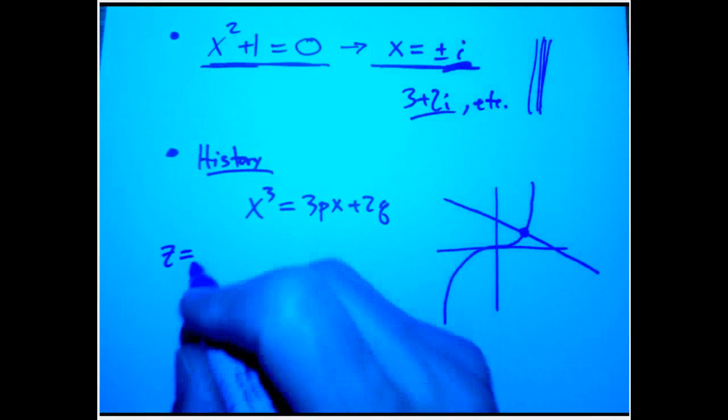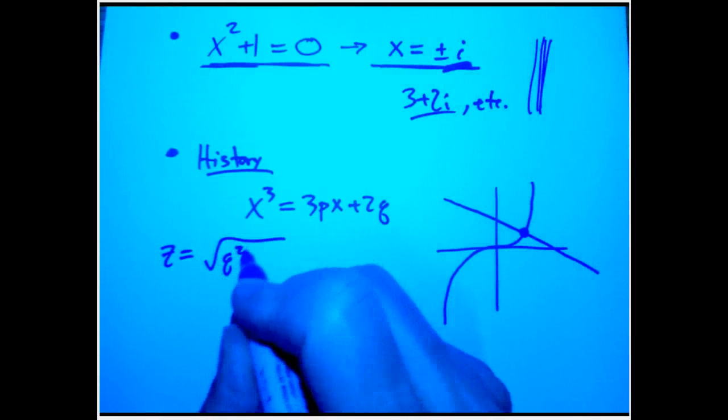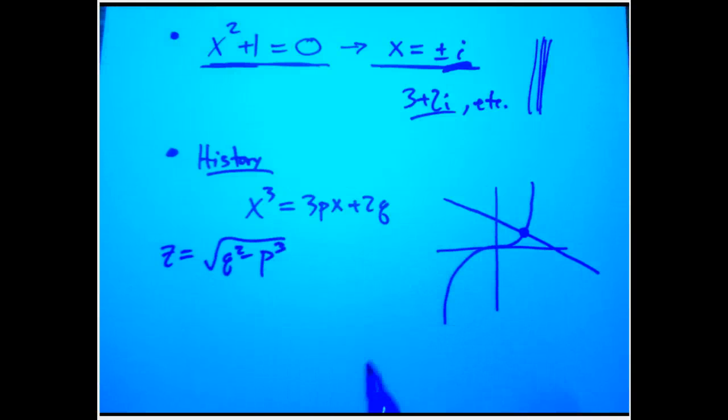It turns out that if we let z, this probably isn't the standard letter, but we're not going to do much with this anyway. Let's say z is the square root of q² minus p³.